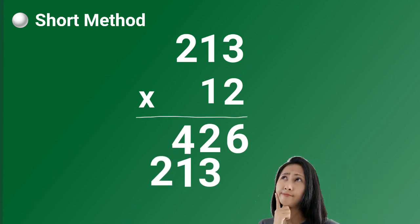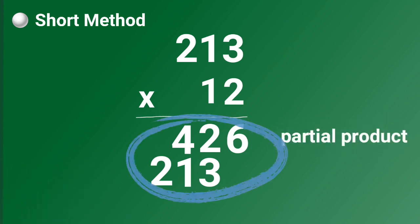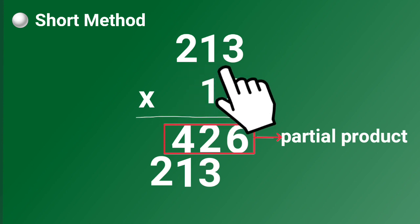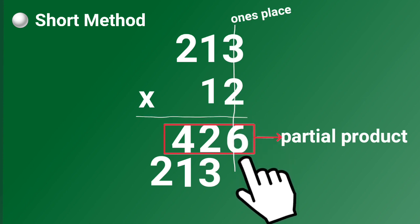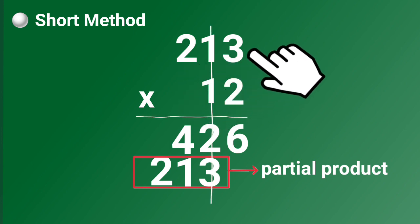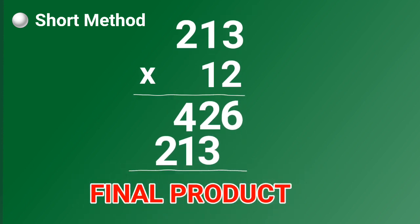Notice something? These are your partial products. The first partial product is the answer from multiplying the ones place of the multiplier to the multiplicand. The last digit of this partial product, which is six, is in the ones place. The second partial product is the answer from multiplying the tens place of the multiplier to the multiplicand. The last digit of this partial product is in the tens place. To get the final product, we have to add the two partial products starting from the lowest place value.